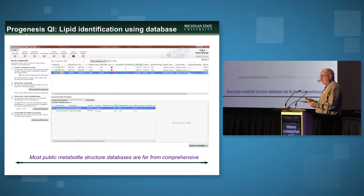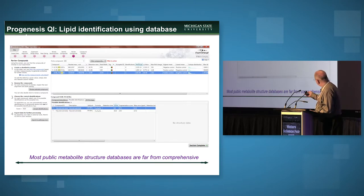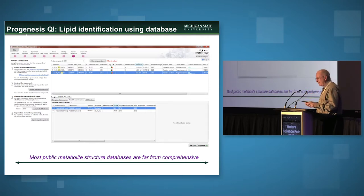We use a variety of databases including LipidBlast and LIPID MAPS within Progenesis to help identify these compounds. Not all triglycerides have yet been identified, so you can sometimes get a list of possible formulas. One gives a better fragmentation score than the other, giving us confidence that we're identifying the correct acyl chains on a triglyceride, though we can't yet clearly distinguish their positions.